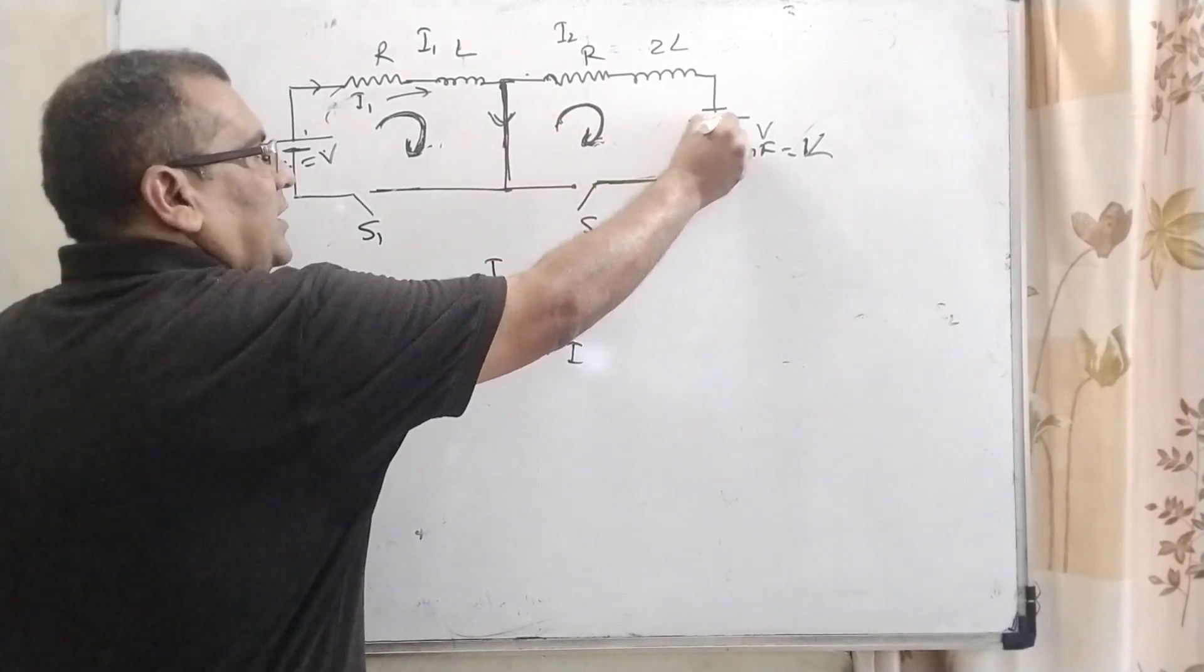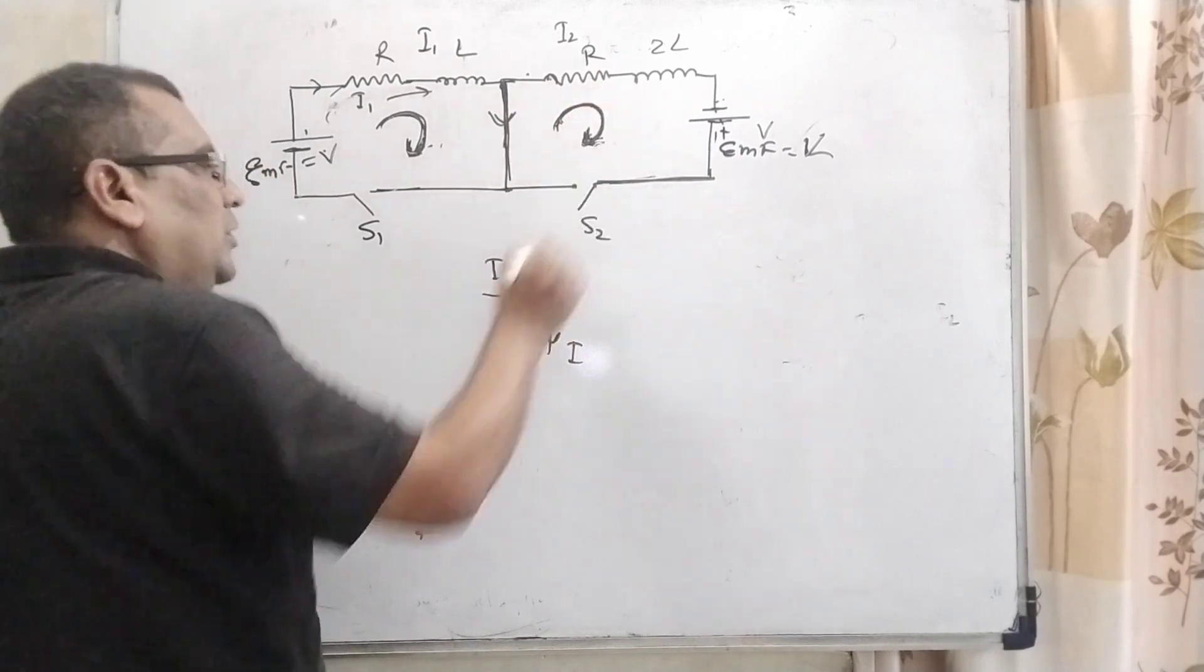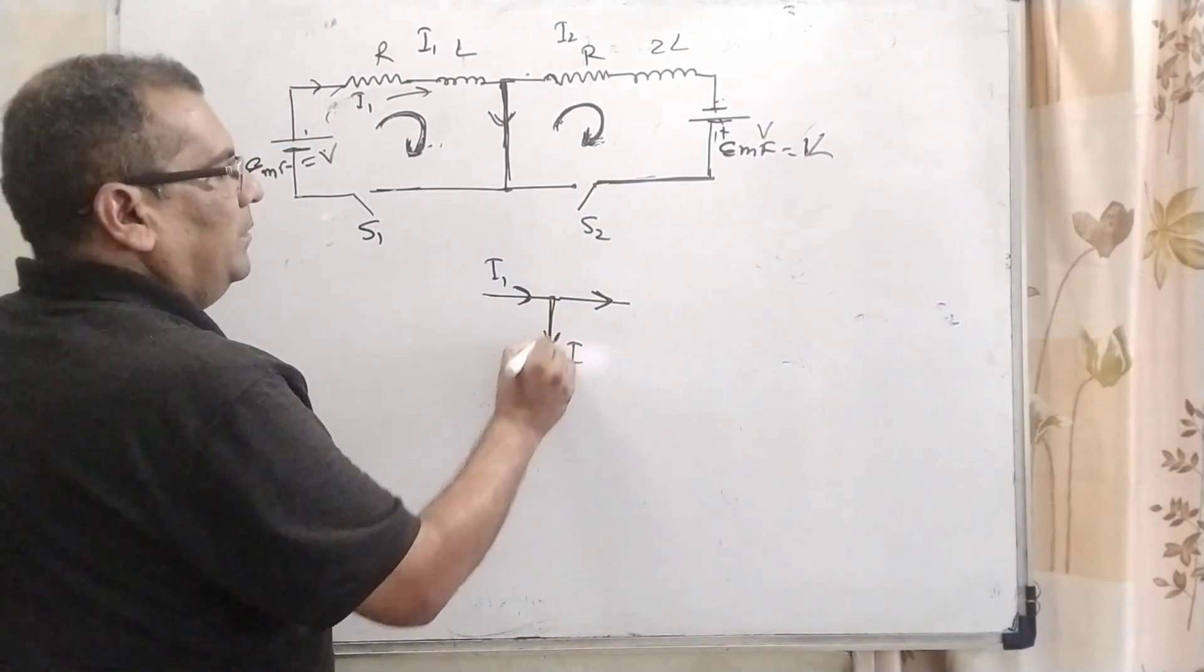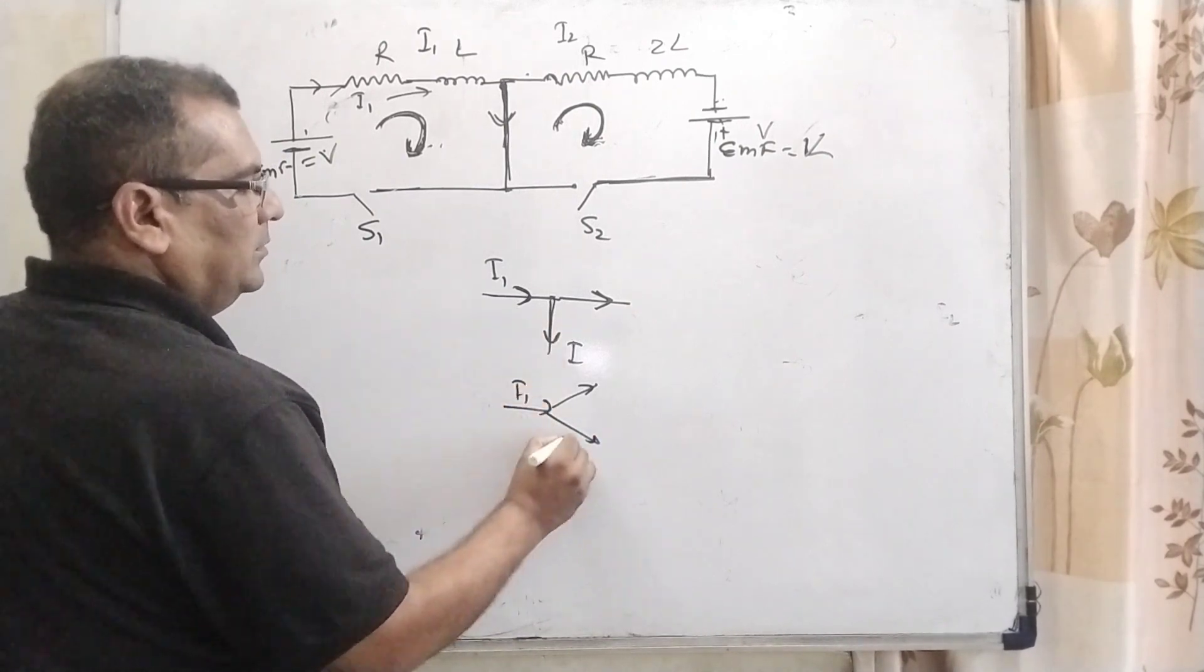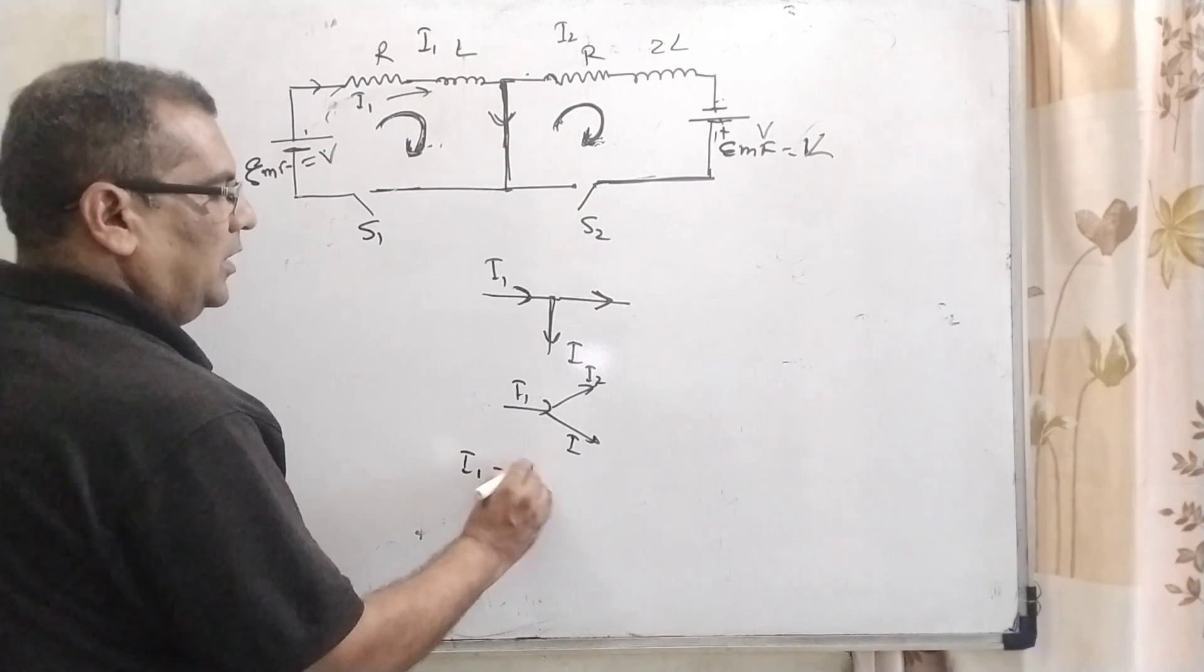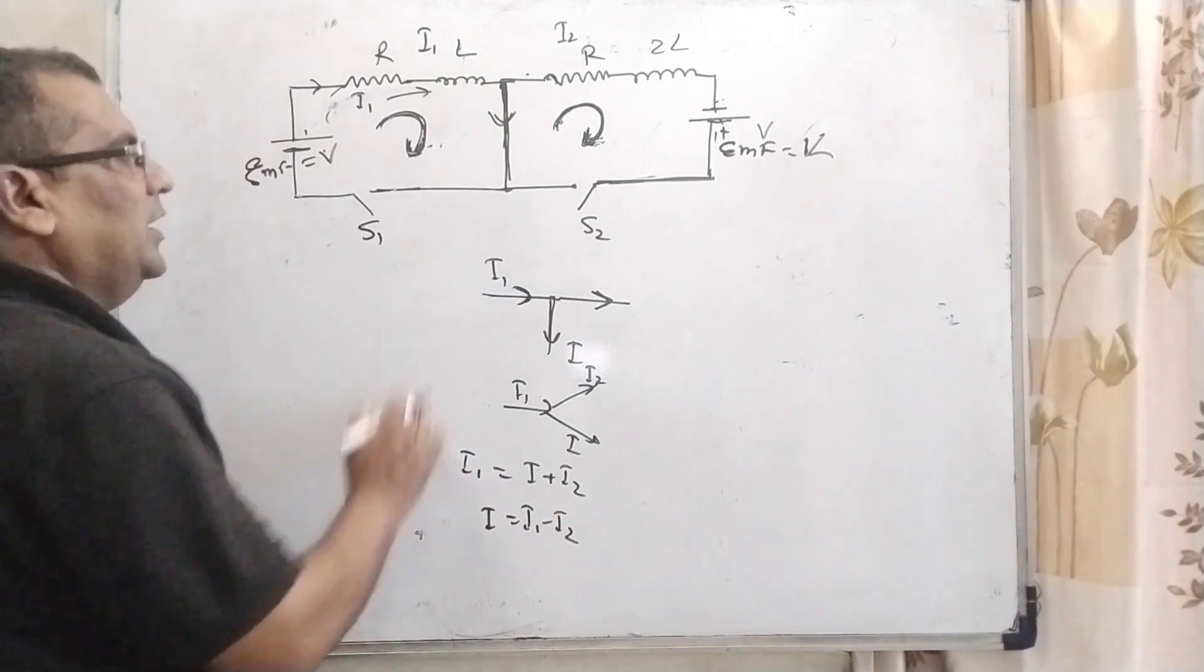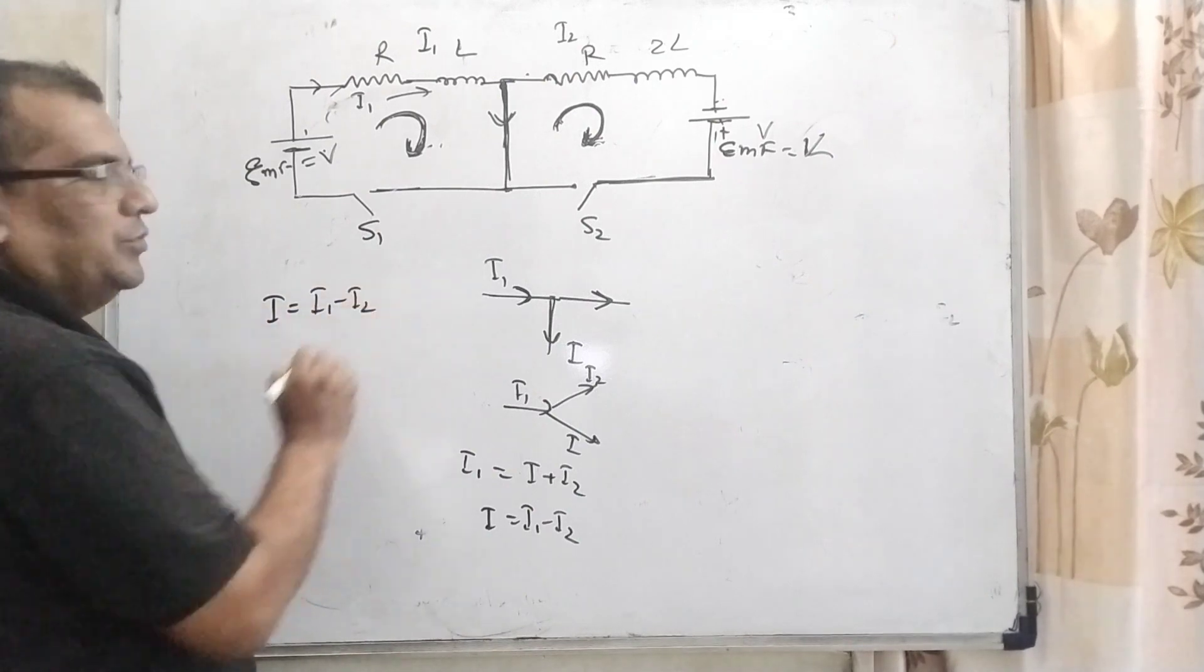And again, we can see that it is positive terminal, it is negative terminal. So current is also again positive to negative direction. Therefore, it is direction again in this direction. By using Kirchhoff law, that is I1, it is I and it is I2. So I1 equal to I plus I2, then it can be written as I equal to I1 minus I2. So resultant current is I equal to I1 minus I2.